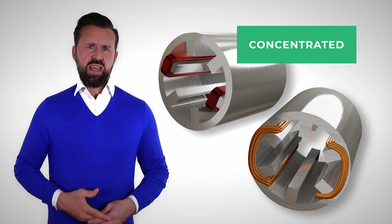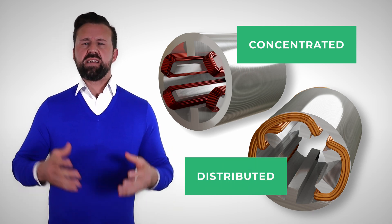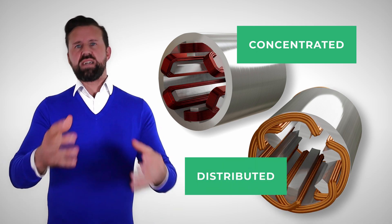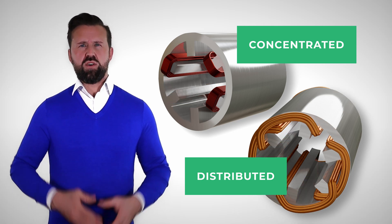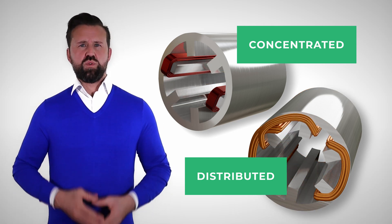Windings for electrical motors can be divided into concentrated winding and distributed windings. In a distributed winding, the winding is always wound over at least two stator teeth, as shown here in the example. In a concentrated winding, on the other hand, only one stator tooth is wound.